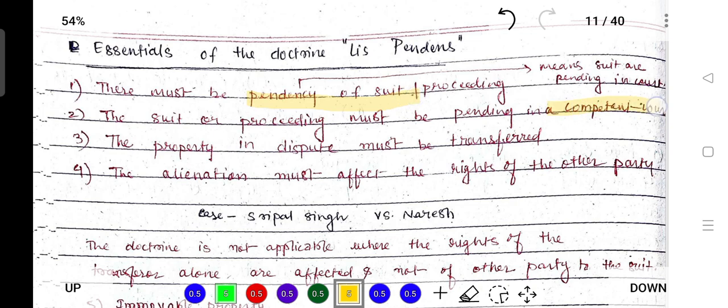What are the essentials of the doctrine of lis pendens? First, there must be a pendency of suit. Second, the pendency of suit must be in a competent court. Third, the property in dispute must be transferred.